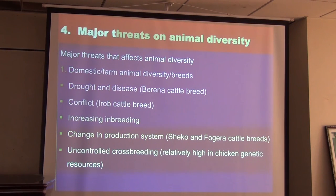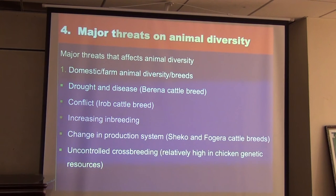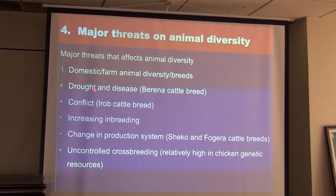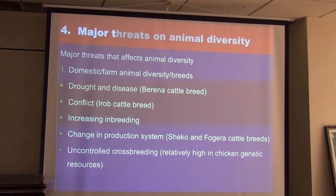We have a lot of diversity, but we also have major threats that decrease it. For domestic or farm animal genetic resources, drought and disease are very important threats, especially for highland cattle breeds. The effect of drought is not only the direct death of animals, but also the restocking programs after drought create a very big genetic dilution. Conflict is another threat — for example, the Arado cattle breed is affected by the Ethiopia-Eritrea border conflict. Inbreeding is also an issue, as the number of animals kept per household is decreasing, increasing homozygous genes, which is deleterious and affects fertility rates.